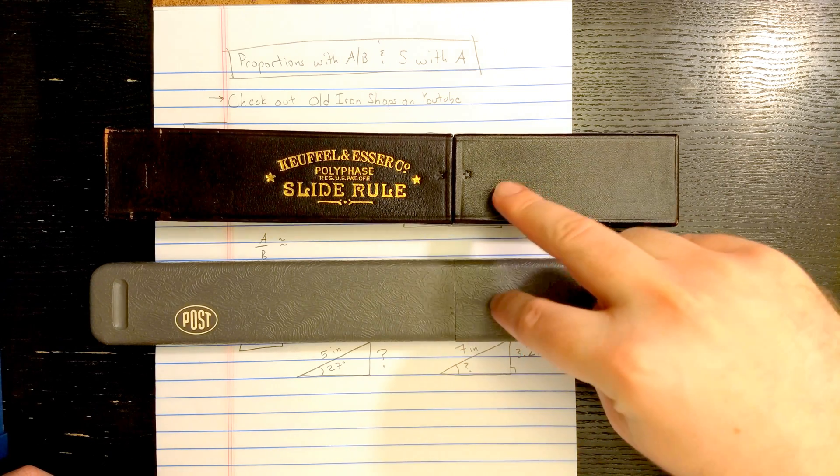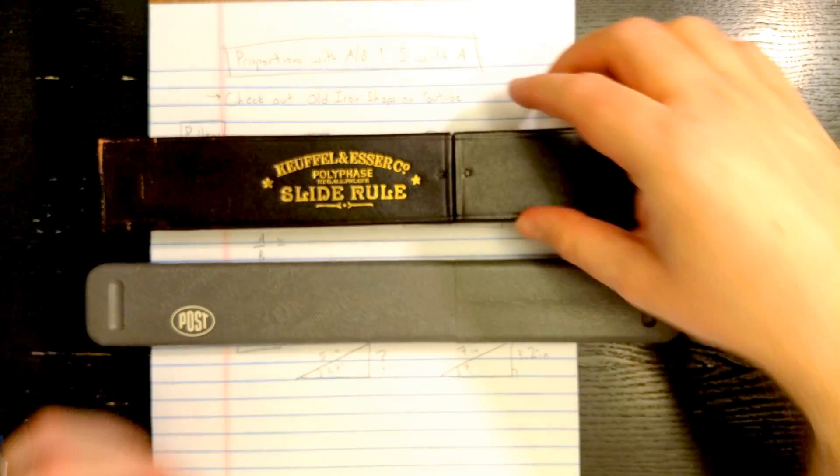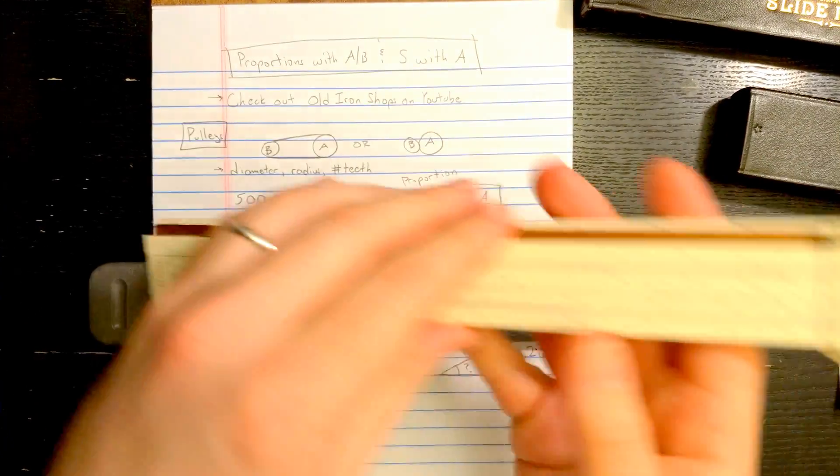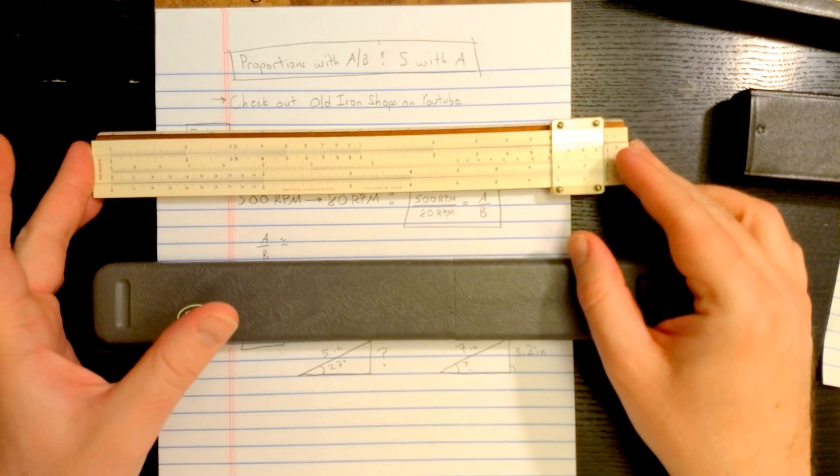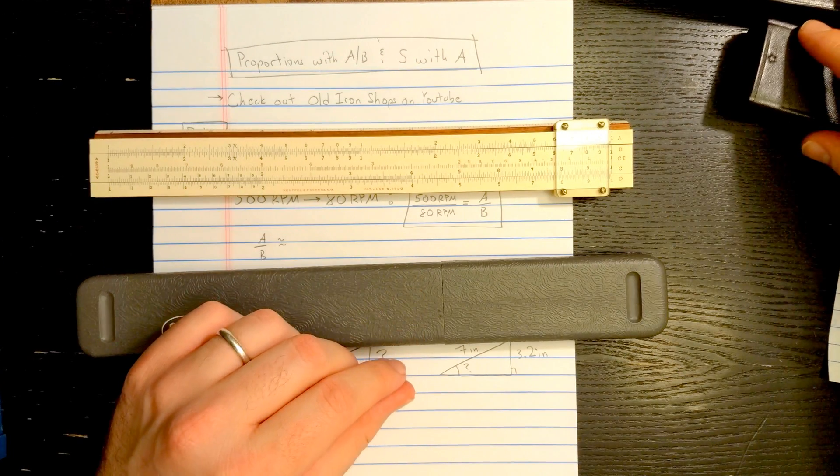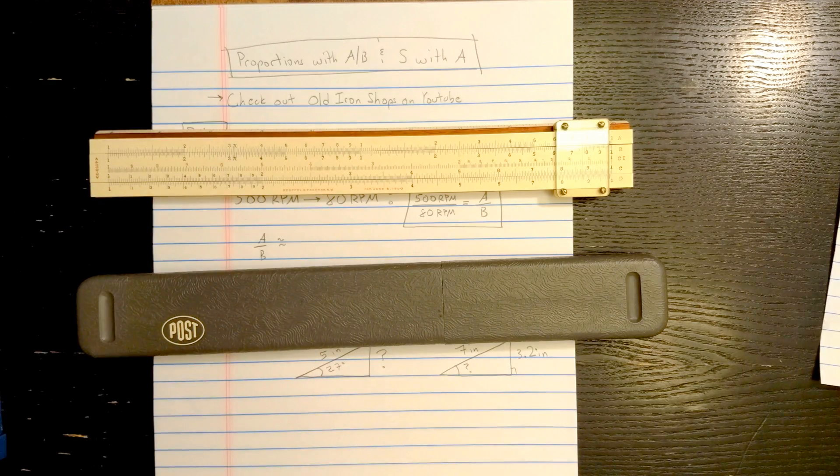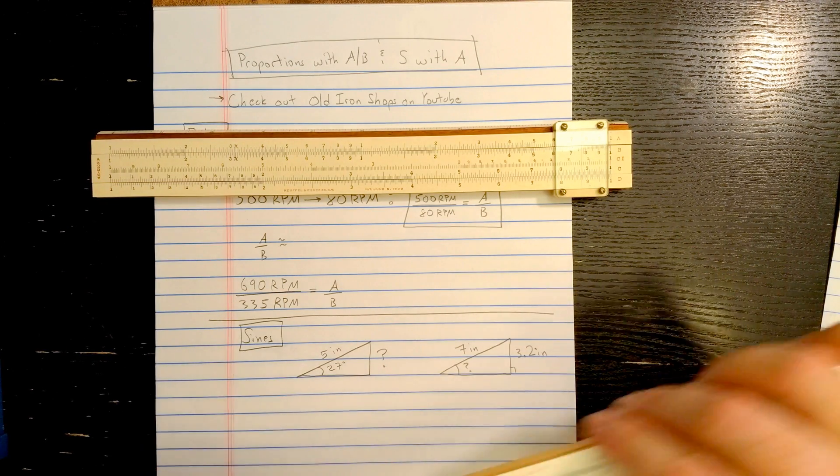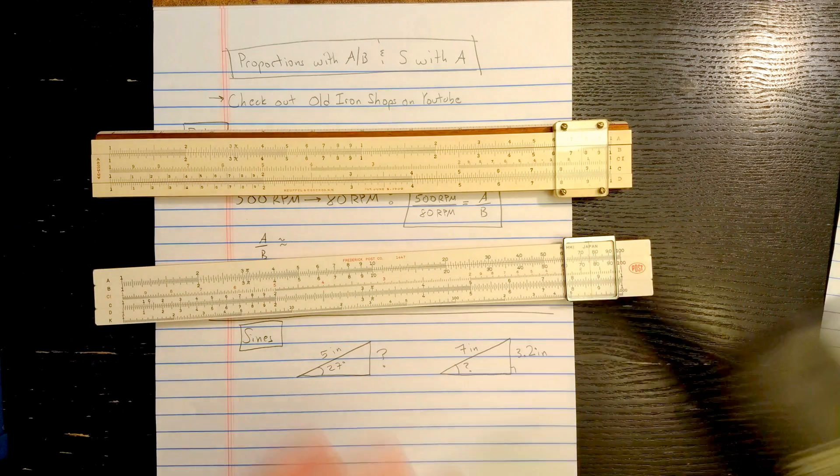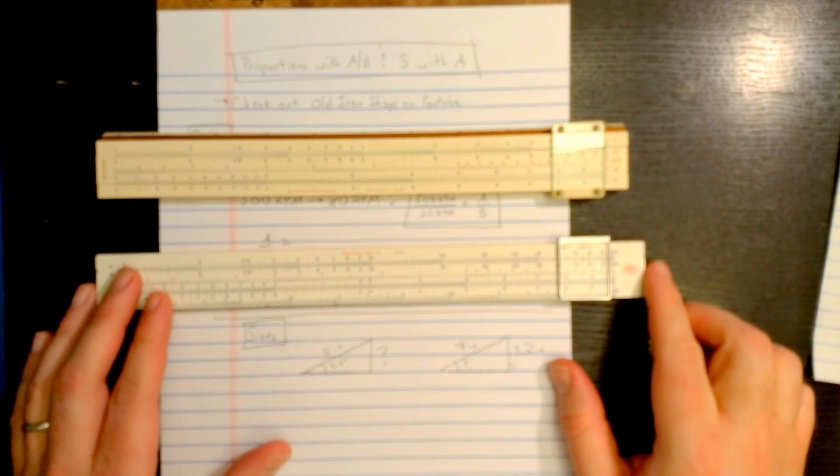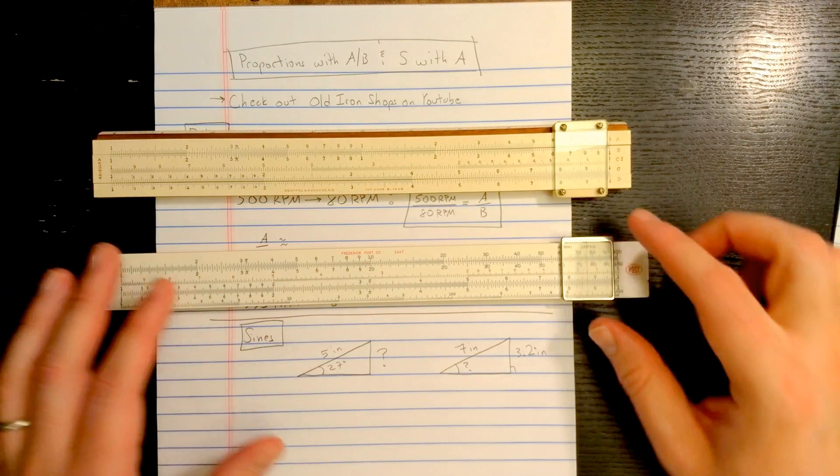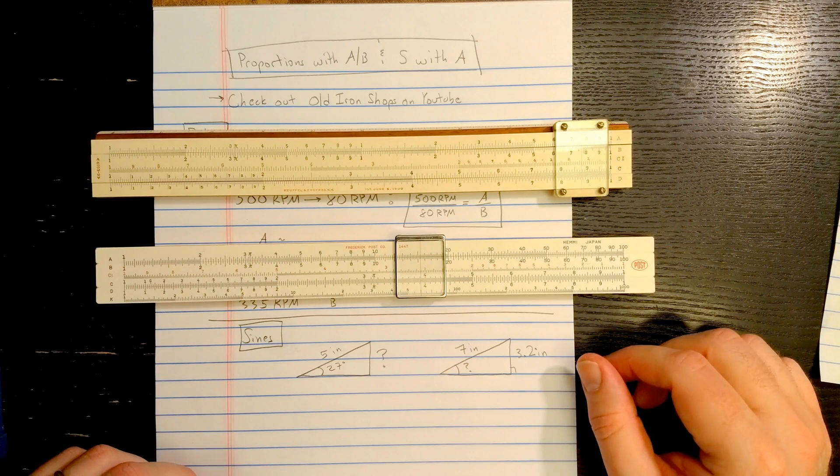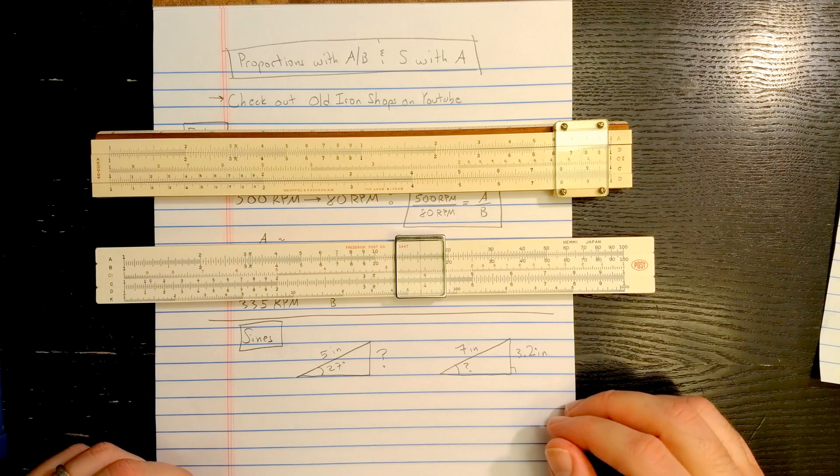I've got two similar, very simple Slide Rules. The K&E Polyphase Slide Rule - let's have a look at that. This Slide Rule goes through a lot of revisions over the years. And I've got a very similar, so that's an American Slide Rule. We've got a very similar Japanese Slide Rule imported to the US, the Frederick Post 1447 Slide Rule. Both of these are very common, very easy to find Slide Rules in good condition.